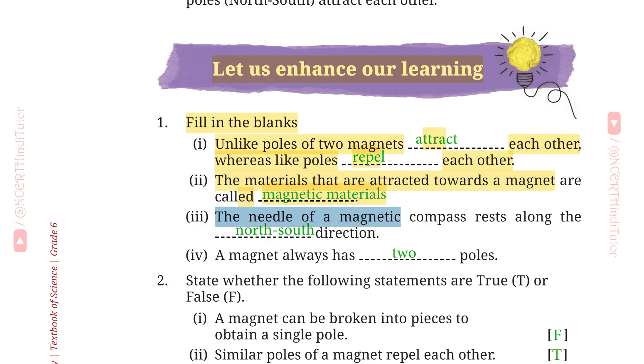Third, the needle of a magnetic compass rests along the north-south direction. Fourth, a magnet always has two poles.